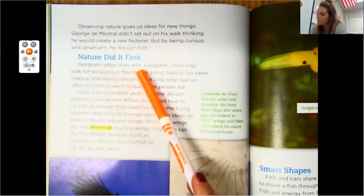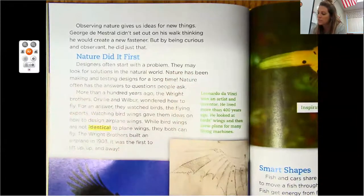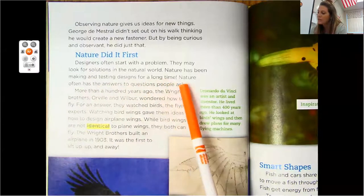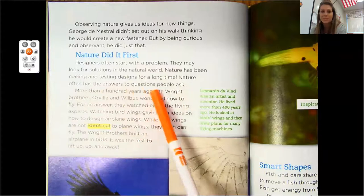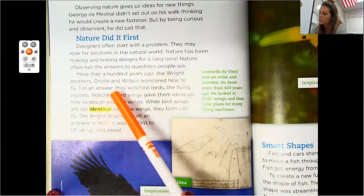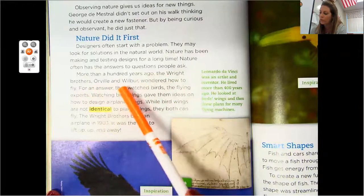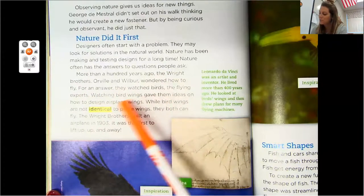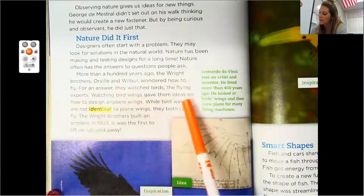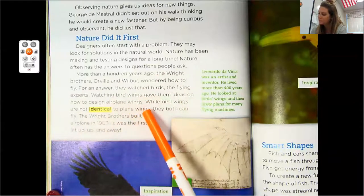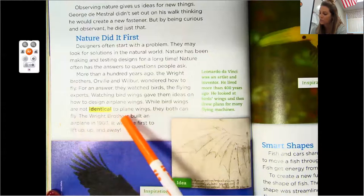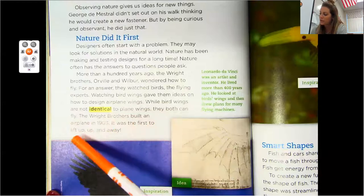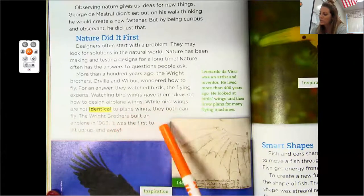Designers often start with a problem. They may look for solutions in the natural world. Nature has been making and testing designs for a long time. Nature often has the answers to questions people ask. More than 100 years ago, the Wright brothers, Orville and Wilbur, wondered how to fly. For an answer, they watched birds. The flying experts watching birds' wings gave them ideas on how to design airplane wings. While bird wings are not identical to plane wings, they both can fly. The Wright brothers built an airplane in 1903. It was the first to lift up, up, and away.